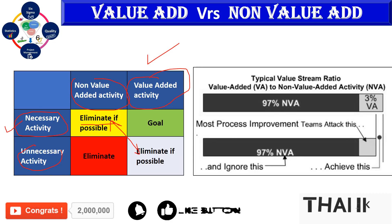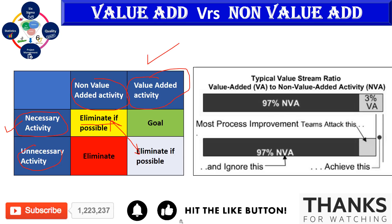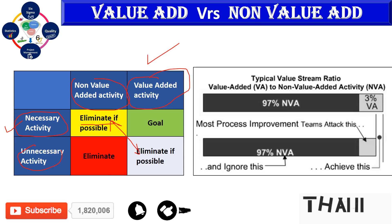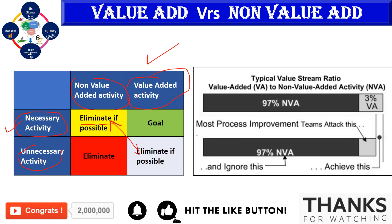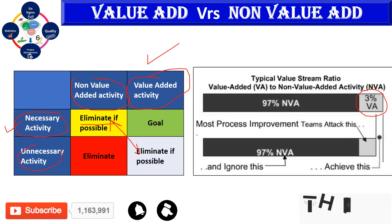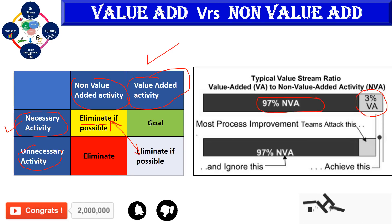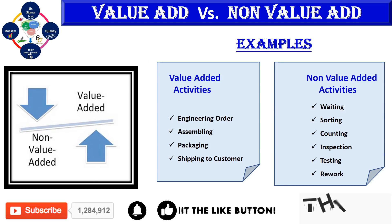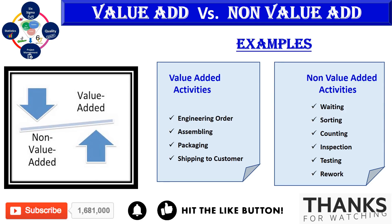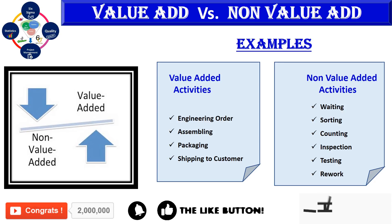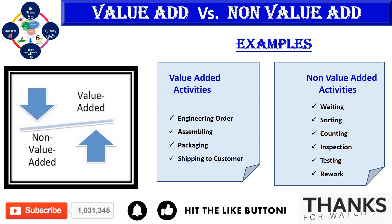Typically, the ratio of value-added to non-value-added activities comes to around 97 percent non-value-added, meaning only 3 percent of what you do is value-added and the rest 97 percent is non-value-added. So your focus should be on increasing value-added activities and reducing non-value-added activities.